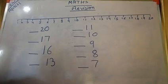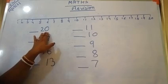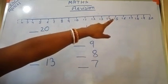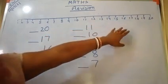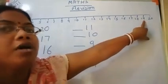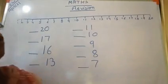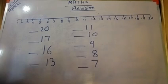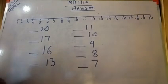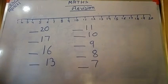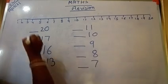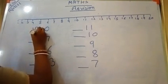So when counting — here it is 20. 20 in backward counting: when you are counting 20, 19 — 19 is the before number of 20. Because 19 is the front number of 20. So 19 is the before number of 20.